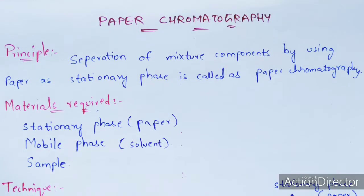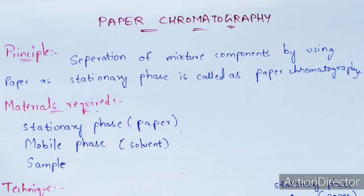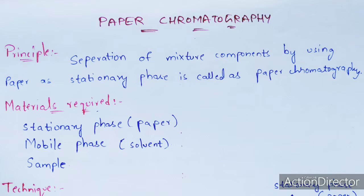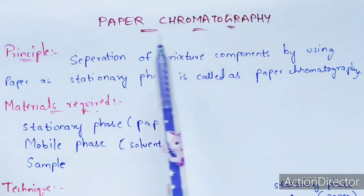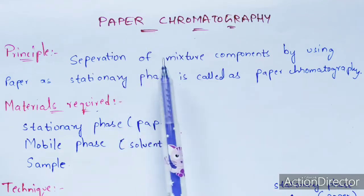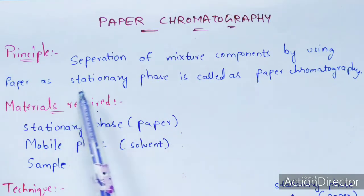The aim of chromatography is mainly to separate molecules from a sample. Among the different types of chromatography techniques, paper chromatography is one of them. In paper chromatography, the separation of mixture components is done using paper as the stationary phase.